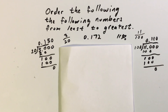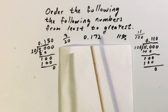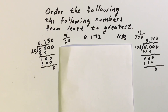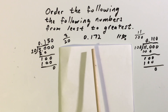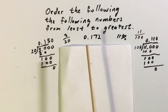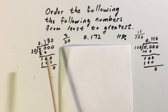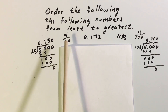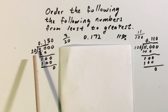We are ordering the same numbers from least to greatest — three-twentieths, a hundred and seventy-two thousandths, and eleven percent. This time I am going to turn all of the numbers into decimals. A hundred and seventy-two thousandths is already in decimal form, so I just need to turn the other two into decimals, going three decimal places. I show the work where I divide twenty into three to turn three-twentieths into a decimal.